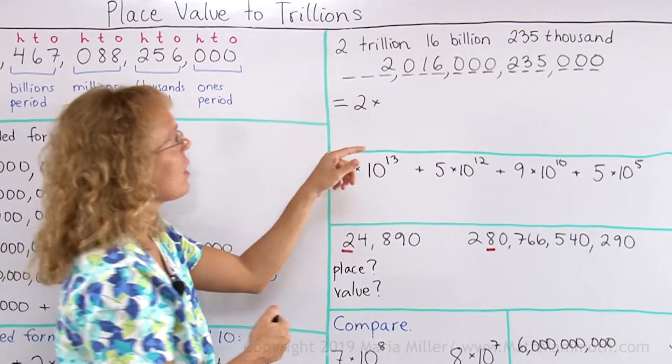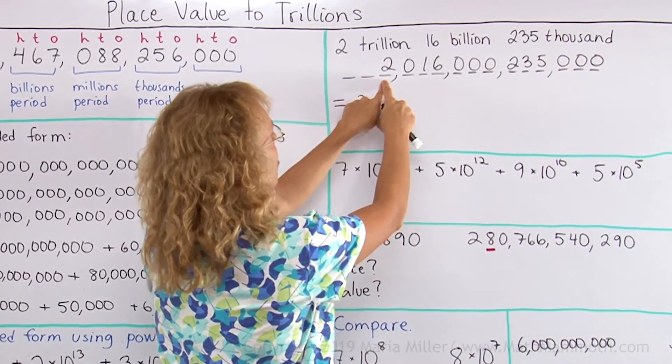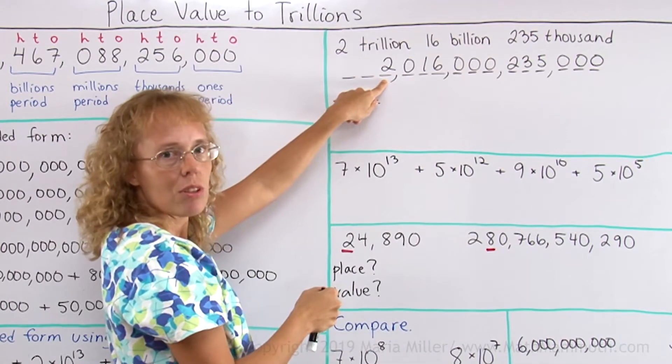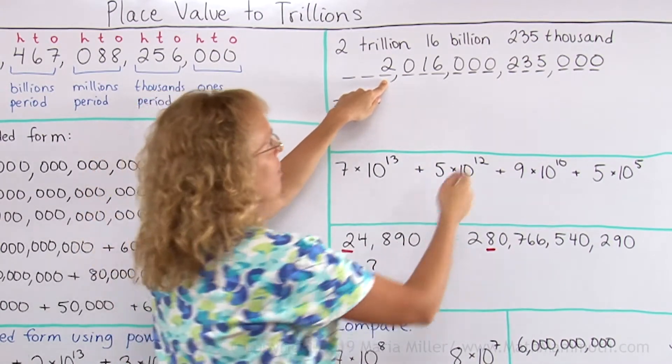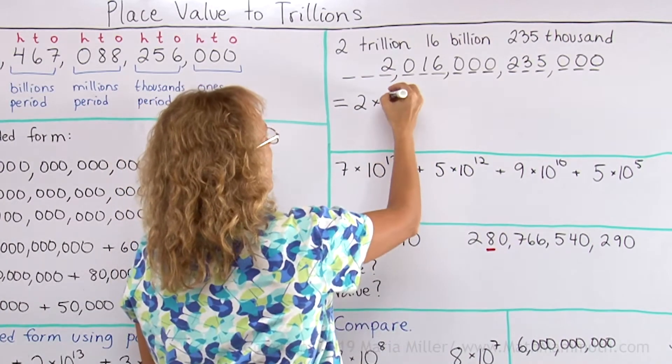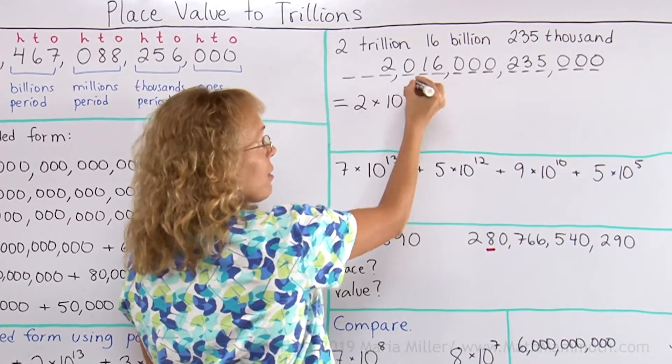how much is that? Okay, if I had 1 here, 1 trillion, then this, this, this, and this would be zeros. How many zeros is that? 3, 3, 3, 3—12 zeros. So, 10 to the 12th power.